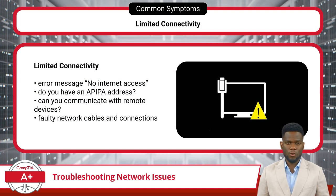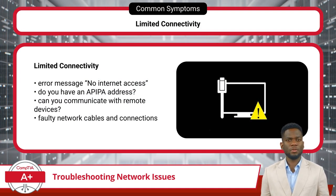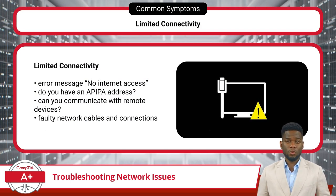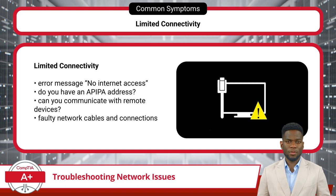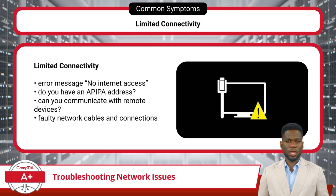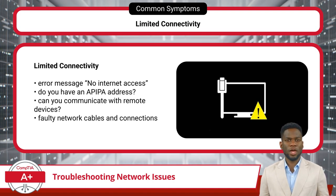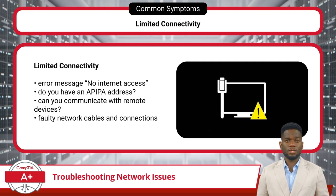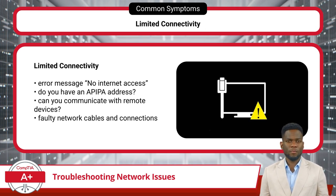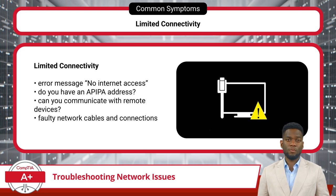Troubleshooting networking issues is crucial to maintain a reliable internet connection and ensure seamless communication between devices. One common symptom users may encounter is limited connectivity, which can manifest as the internet connection being down or displaying a message stating 'no internet access.' When faced with limited connectivity, one common troubleshooting step is to check whether the device has obtained an APIPA address. APIPA addresses are self-assigned IP addresses that devices generate when they fail to obtain an IP address from a DHCP server.